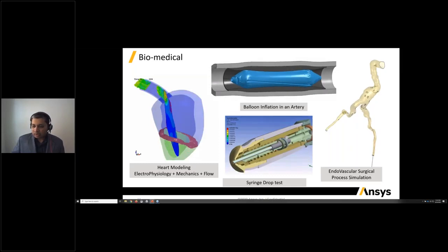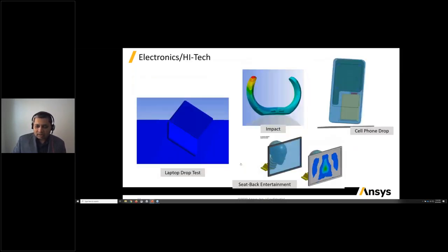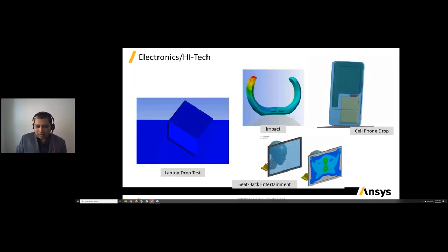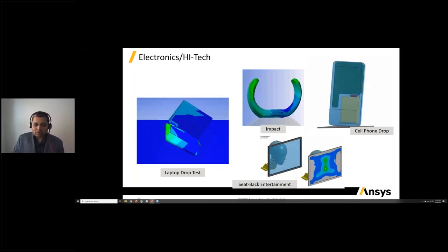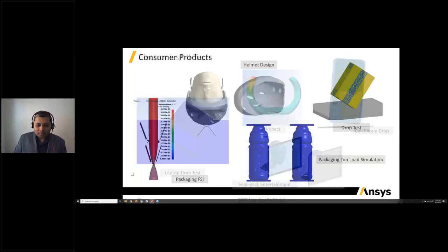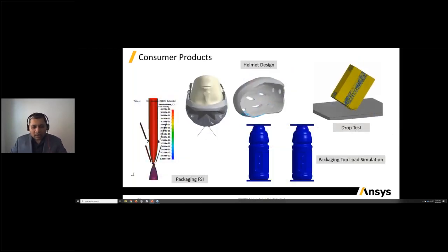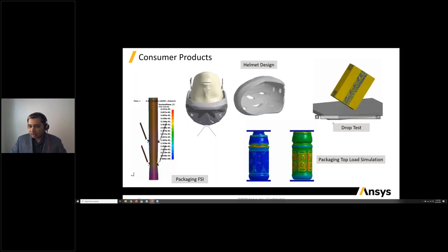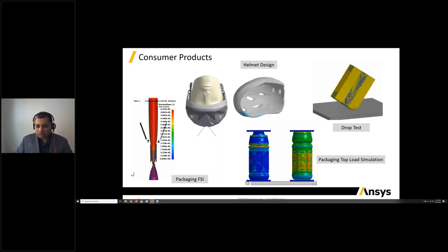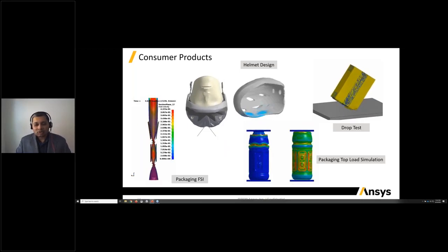Other animations highlight surgical process simulation and syringe drop tests. In electronics, we look at drop tests for devices and their behavior when dropped. In consumer goods, we look at packaging applications, helmet design, bottle design, and top load simulation — for example, reinforcing packaging corners to prevent contents from being damaged when delivered.